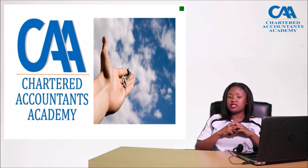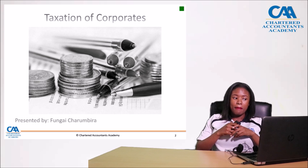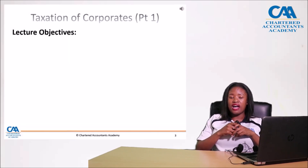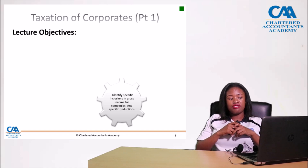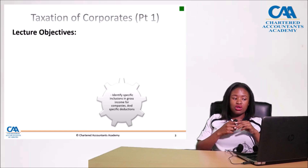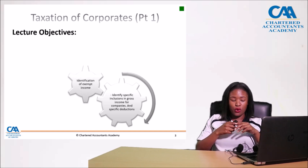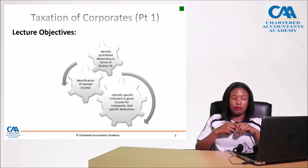In this lecture it is going to be split into two parts. The lecture objectives of the first part are: firstly, you have to be able to identify the special inclusions and specific deductions from a corporate's gross income; secondly, to identify the exempt income of a corporate; and lastly, to identify the prohibited deductions in terms of the taxable income of a corporate.